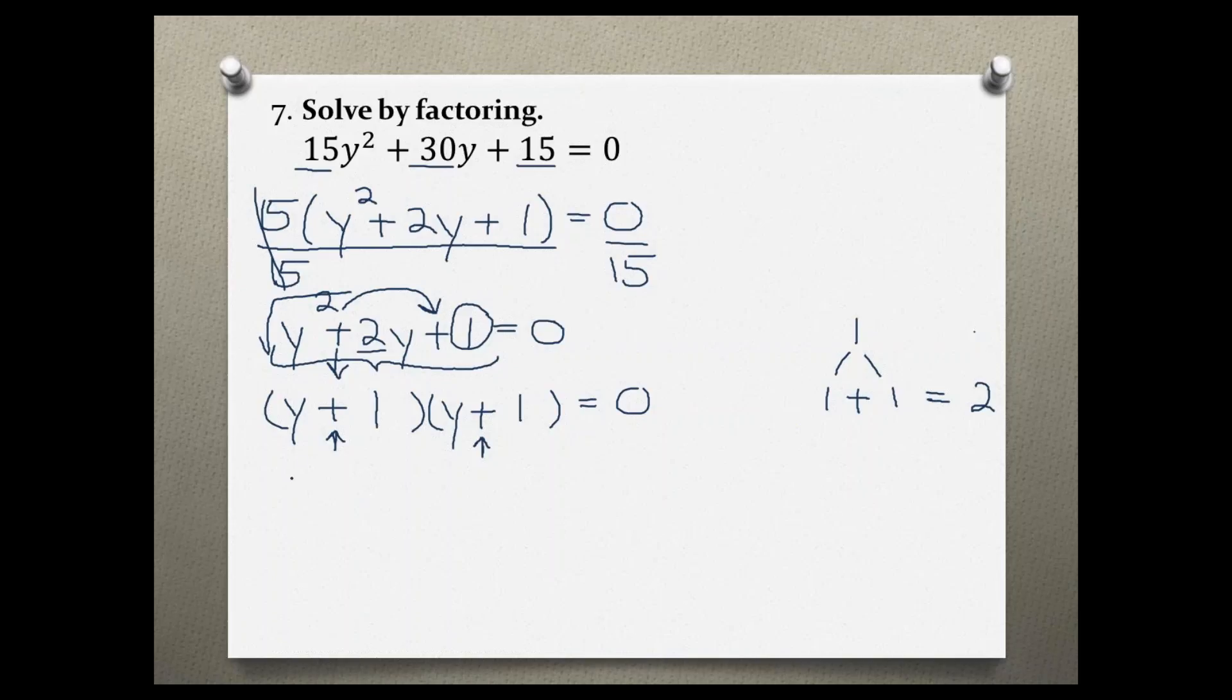They are the same, so it doesn't matter in which order I write them. Now I can apply the zero product rule, and I take each binomial and individually set it equal to zero. Because they are exactly the same, I actually only have to do it once.